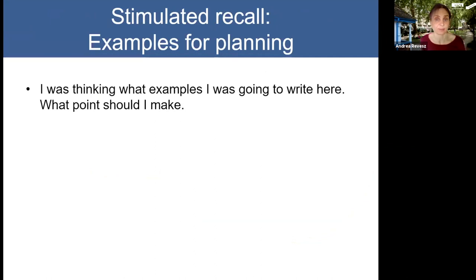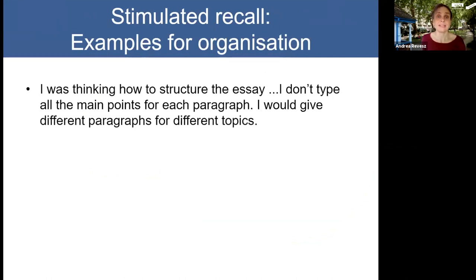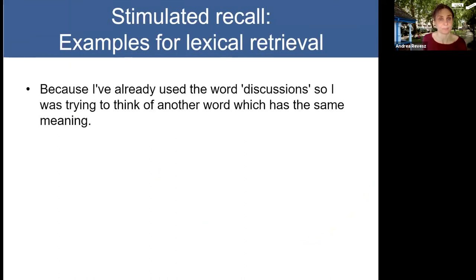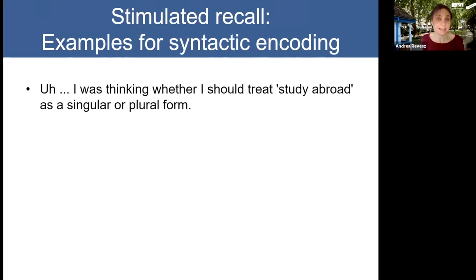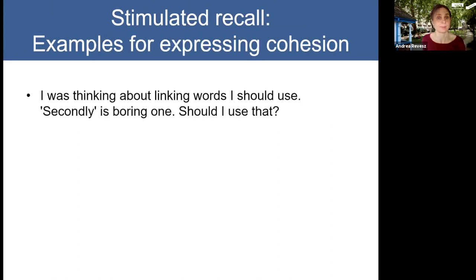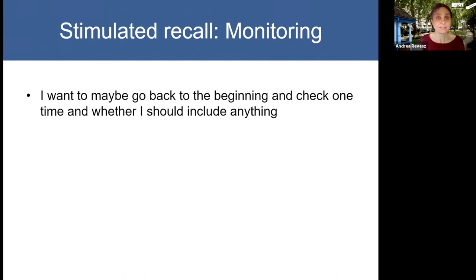Here are some examples: for a planning-related comment — 'I was thinking what examples I was going to write, what points should I make?' For organization — 'I was thinking of how to structure the essay; I don't type all the main points for each paragraph, I would give different paragraphs to different topics.' For lexical retrieval — 'Because I've already used the word discussions, I was trying to think of another word with the same meaning.' For syntactic encoding — 'I was thinking whether I should treat study abroad as a singular or plural form.' For expression of cohesion — 'I was thinking about linking words I should use; second is a boring one, should I use that?' And for monitoring — 'I want to maybe go back to the beginning and check one time whether I should include anything.'